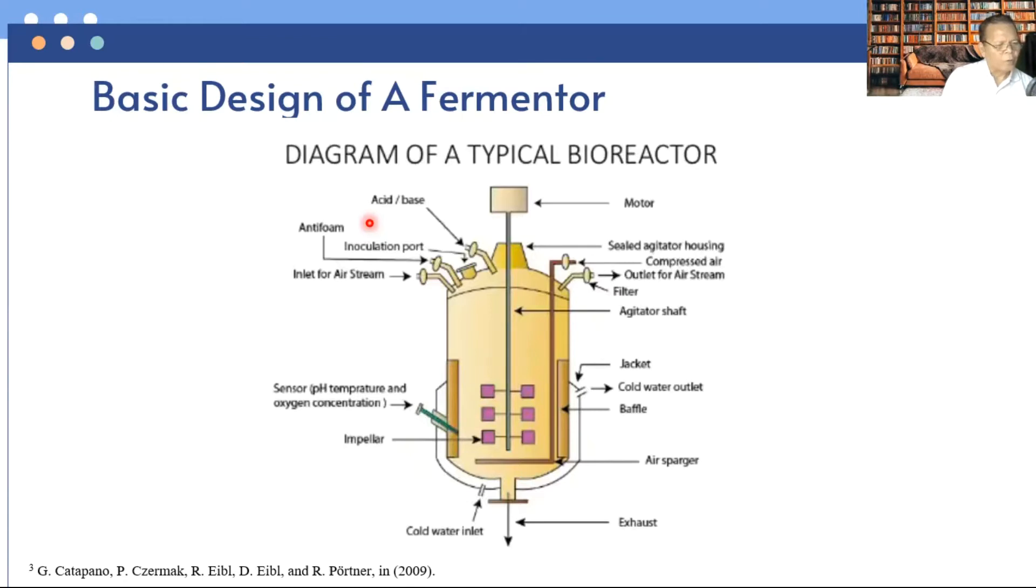Bioreactors should provide for the following: agitation for mixing of cells and medium, aeration for aerobic fermentation or oxygen supply, regulation of factors like temperature, pH, pressure, aeration, nutrient feeding, liquid level, etc., sterilization and maintenance of sterility, and withdrawal of cells and medium in the case of continuous fermentation.